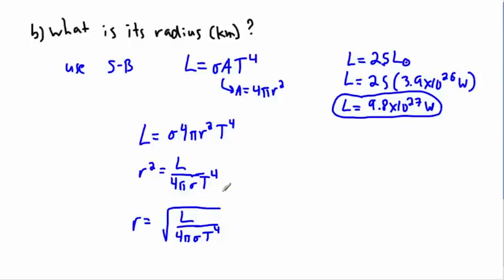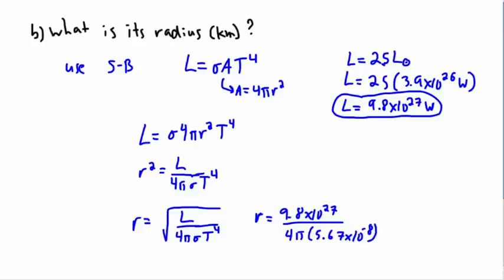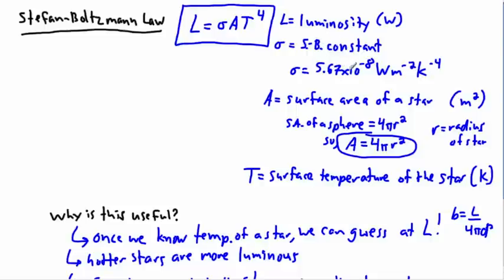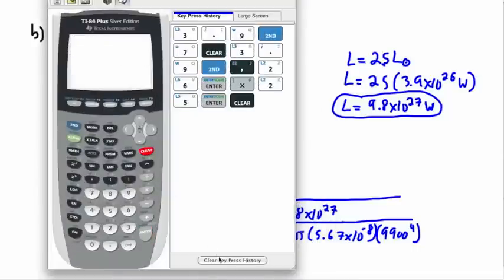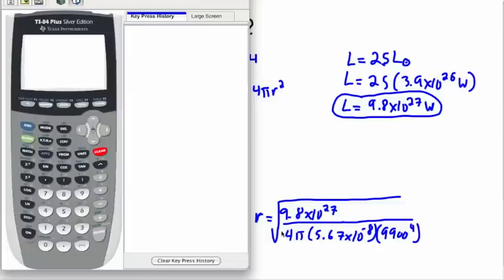This may seem complicated but we can do it with our calculator. So r equals — let's fill in the values — we have 9.8 × 10²⁷ divided by 4π times sigma (5.67 × 10⁻⁸) times 9,900⁴. I like to work on the most complicated part first, computing the denominator in pieces, and then divide the numerator by that answer and take the square root.